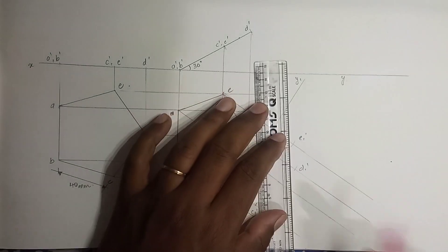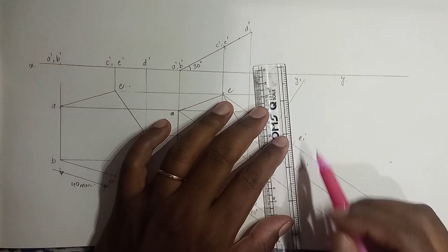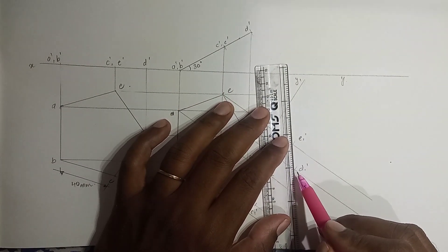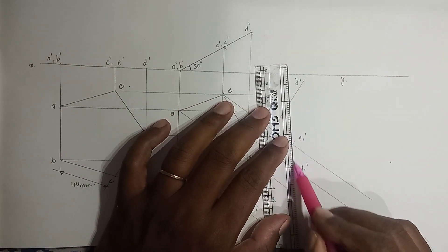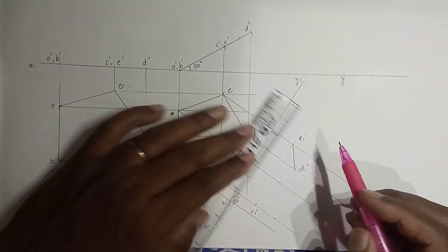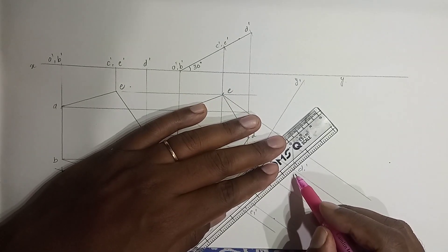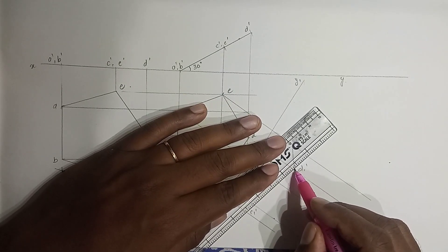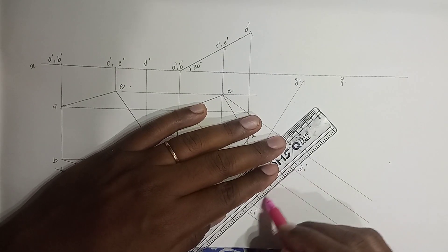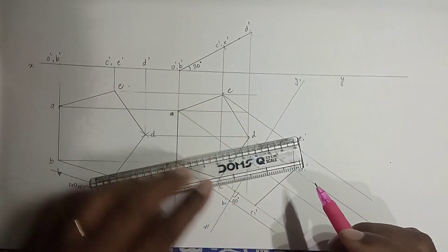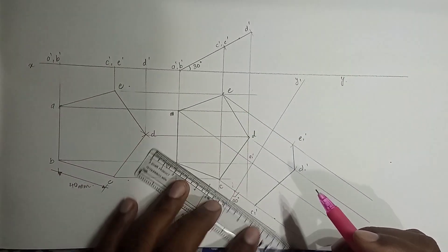Connecting these points, we get the projection of this plane in the front view, which is what we would also obtain from the normal general method.